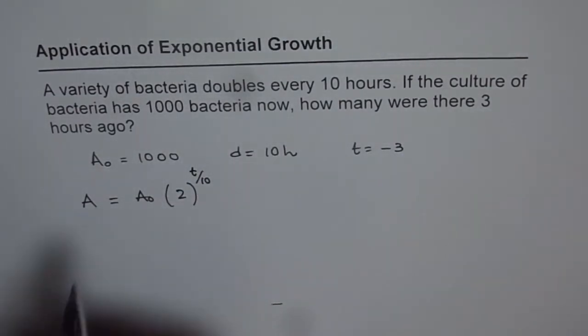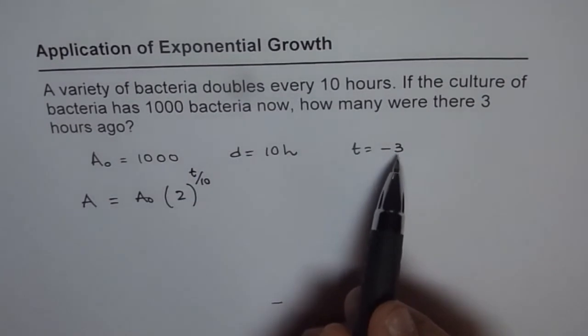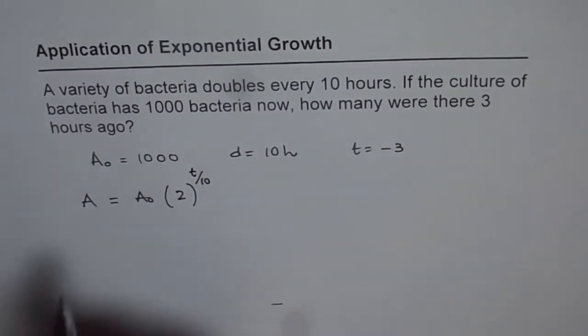Now we need to find the number of bacteria which were present 3 hours ago. That means T is minus 3 for us, and initial amount is 1000.